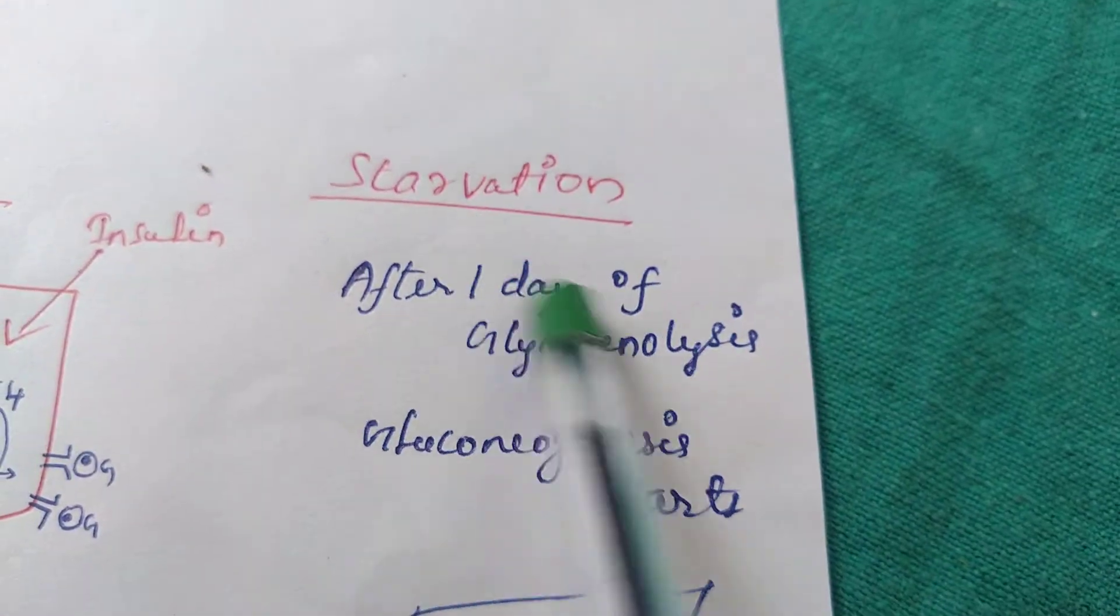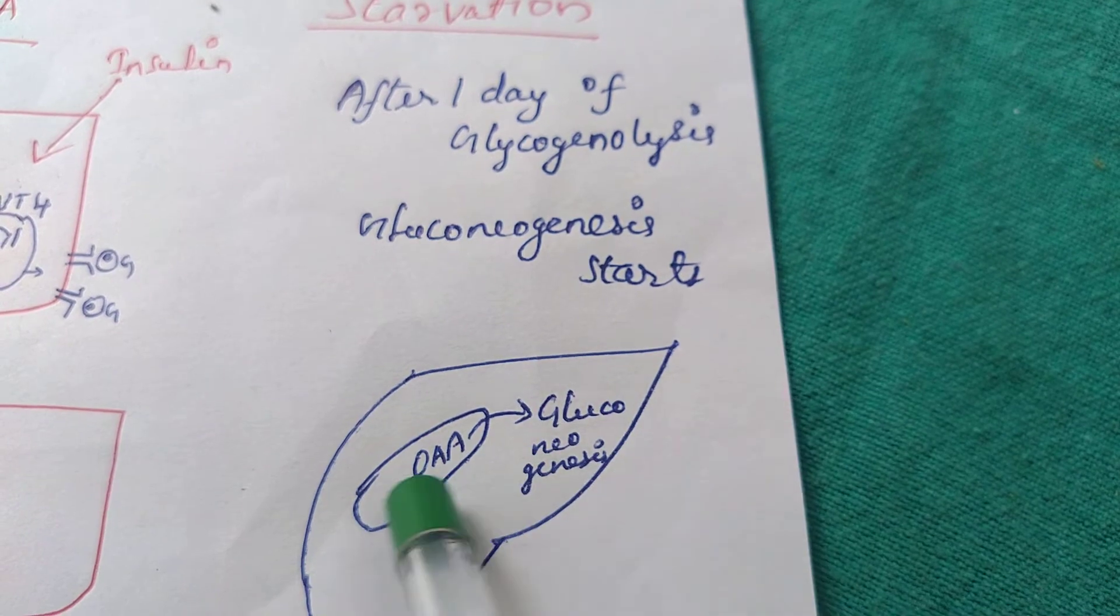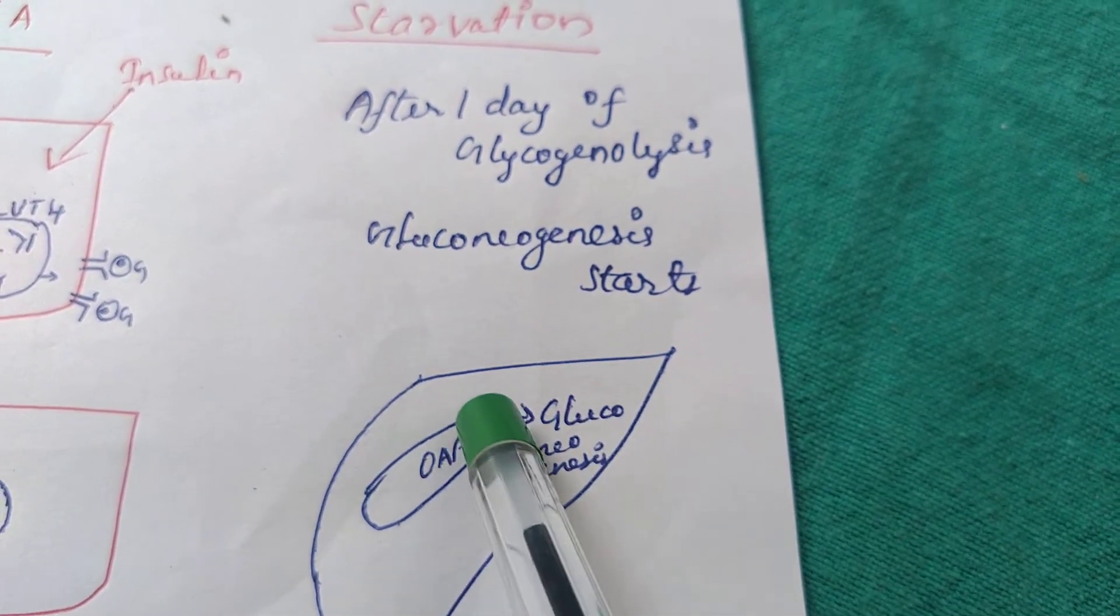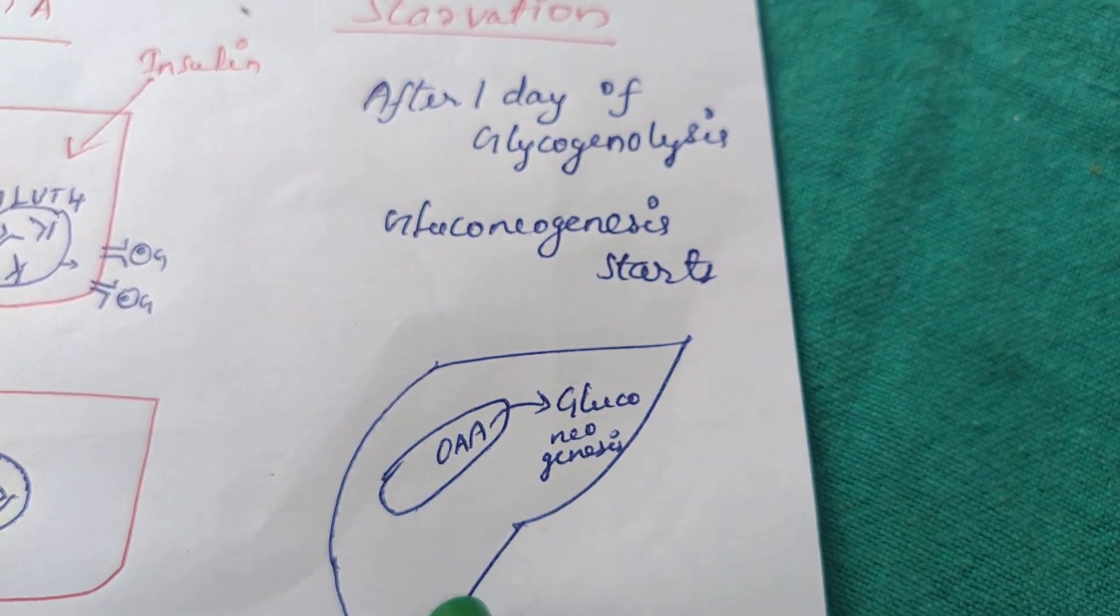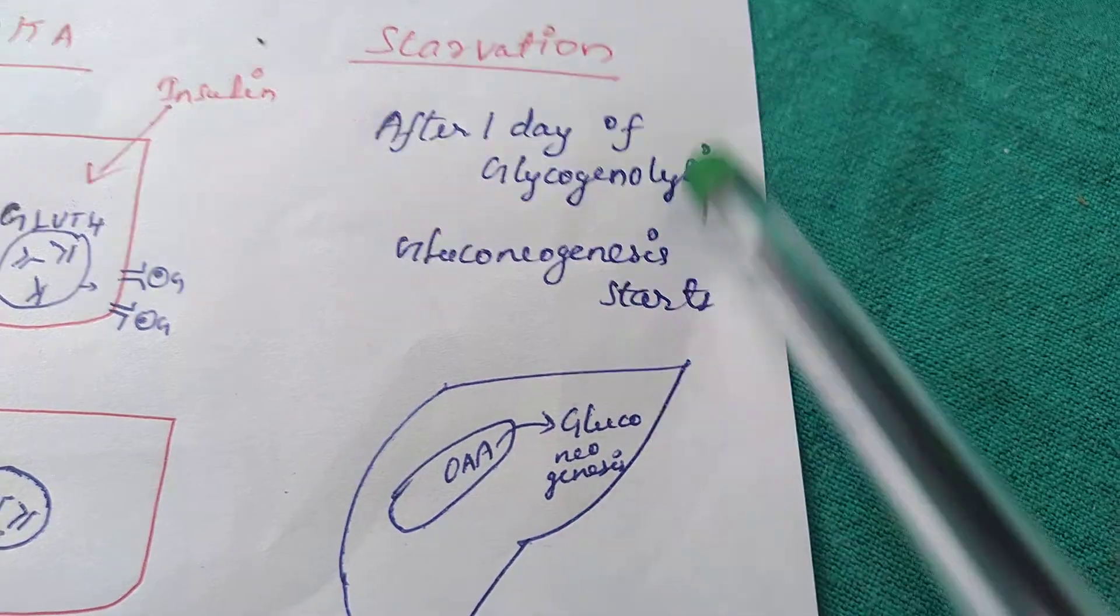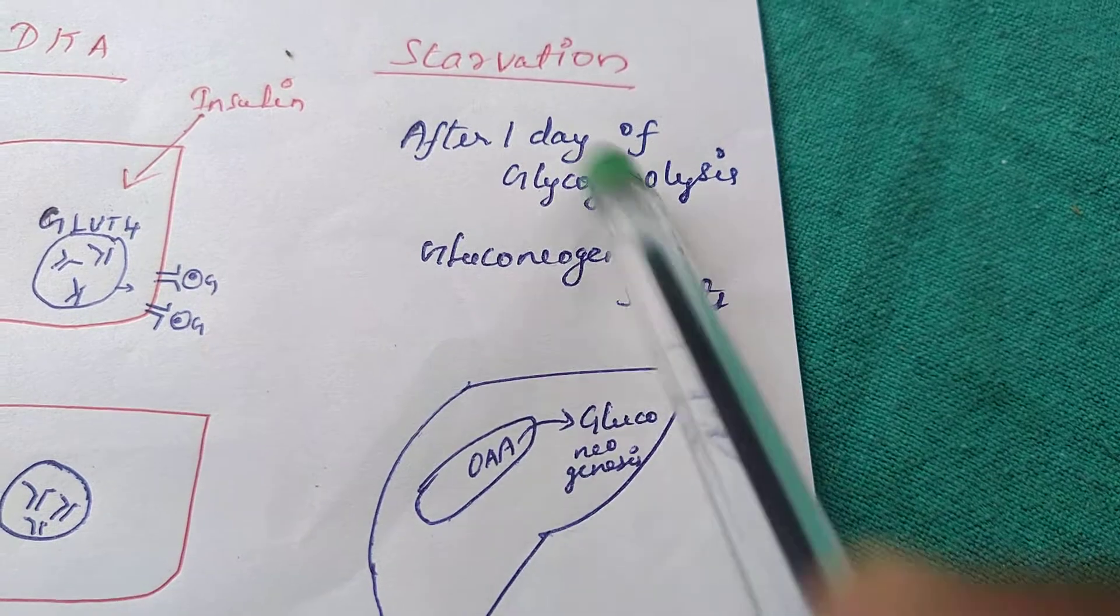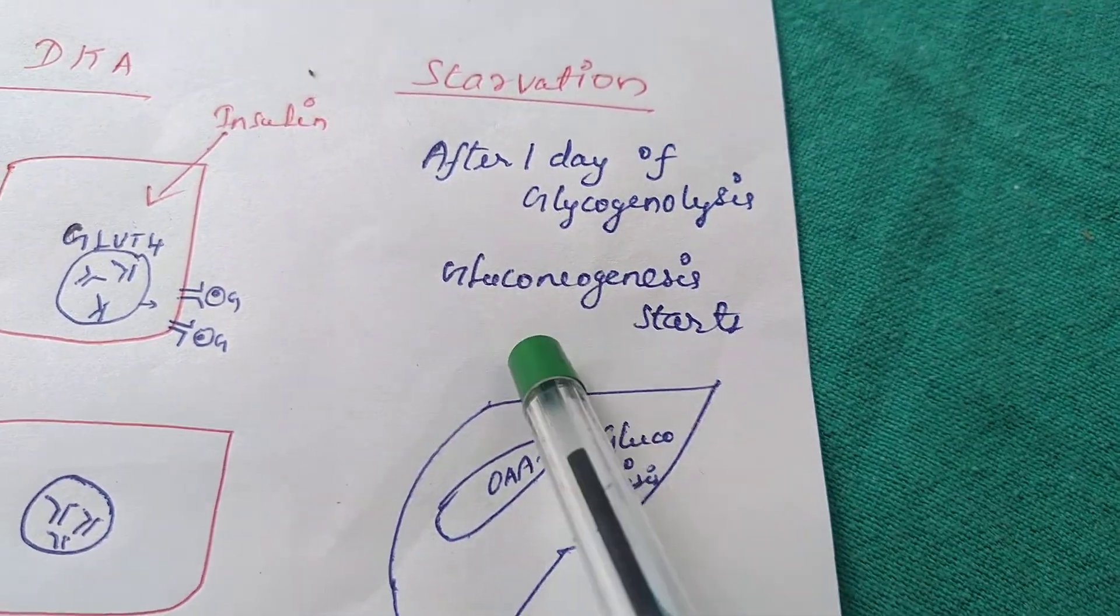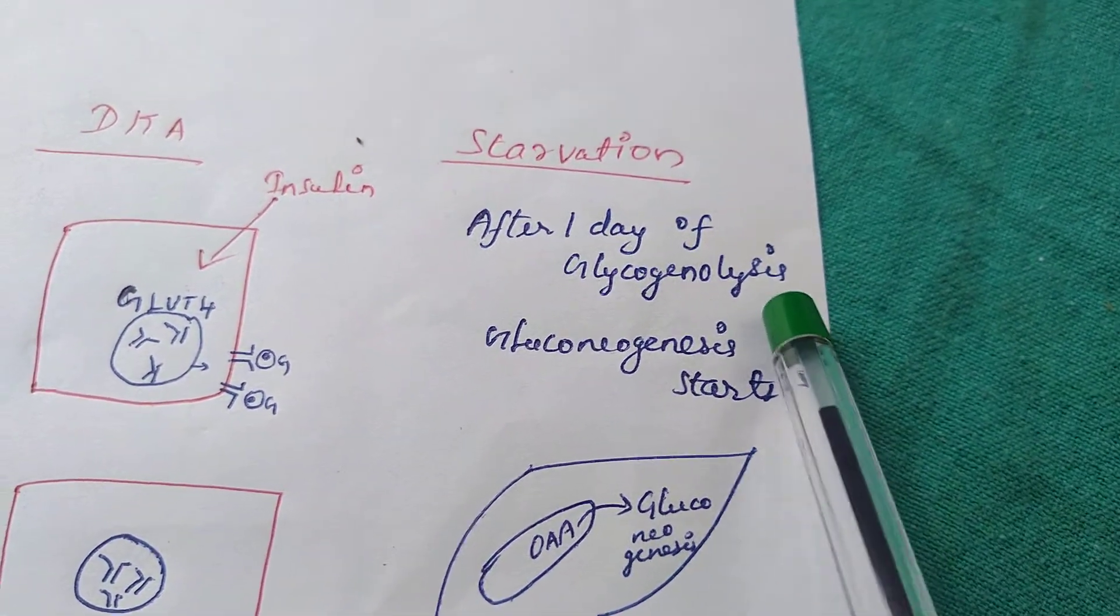In starving states, after the day of glycogenesis, gluconeogenesis starts. For gluconeogenesis to happen, oxaloacetate will be moved from the mitochondria to the cytoplasm. So oxaloacetate availability inside the mitochondria is less and acetyl-CoA will enter into ketone body synthesis. Ketone body is produced in starving states for energy-providing mechanisms, so don't consider ketone bodies as always dangerous. It is utilized and loved by peripheral muscles and adipose tissue.